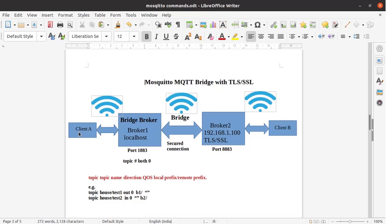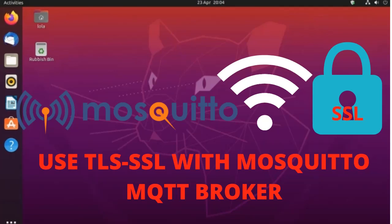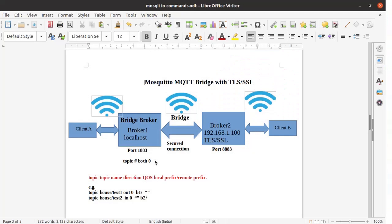Client A is addressing broker1 and client B is addressing broker2. The topic is topic/# with both direction 0, meaning any topic published from broker1 to broker2, or any topic broker1 receives from broker2. If you want to know how to create a Mosquitto MQTT bridge, or how to implement TLS/SSL on the Mosquitto MQTT broker, watch those videos on this channel — links are in the description. Now let us implement the Mosquitto MQTT bridge with TLS/SSL encryption.